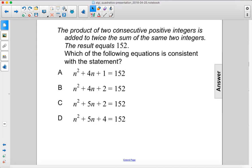The product of two consecutive positive integers is added to twice the sum of the same two integers. The result equals 152. Which of the following equations is consistent with that statement?